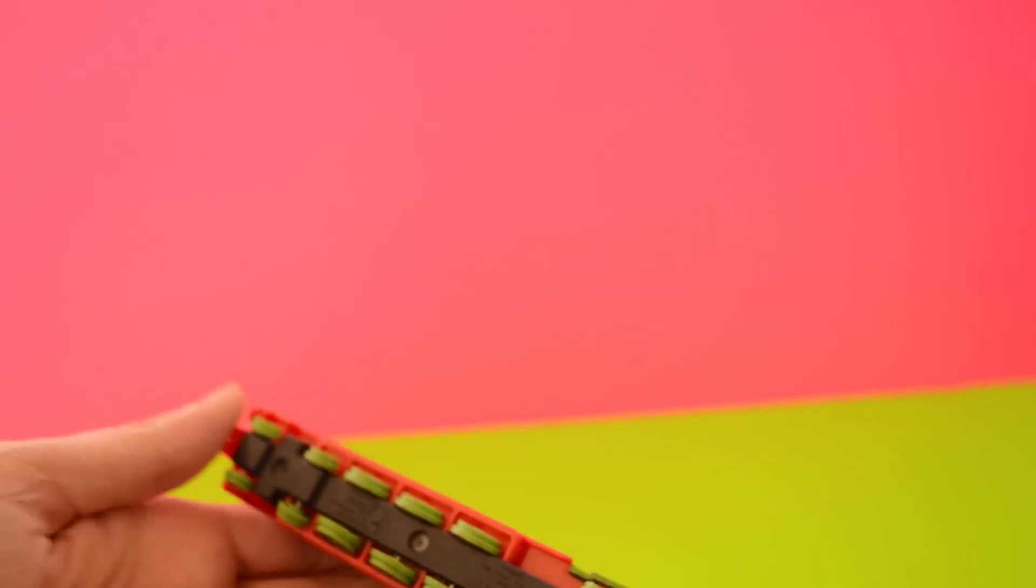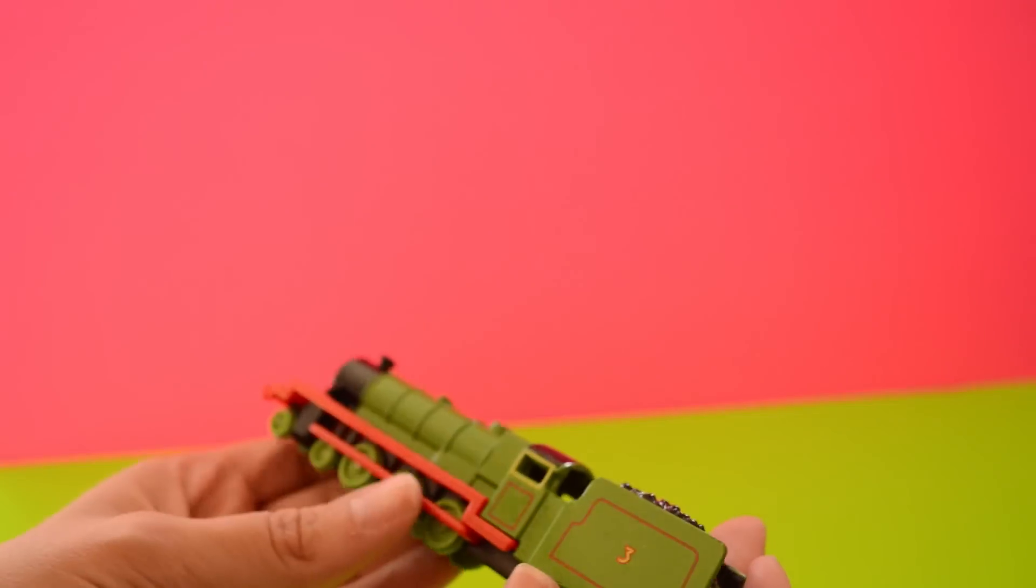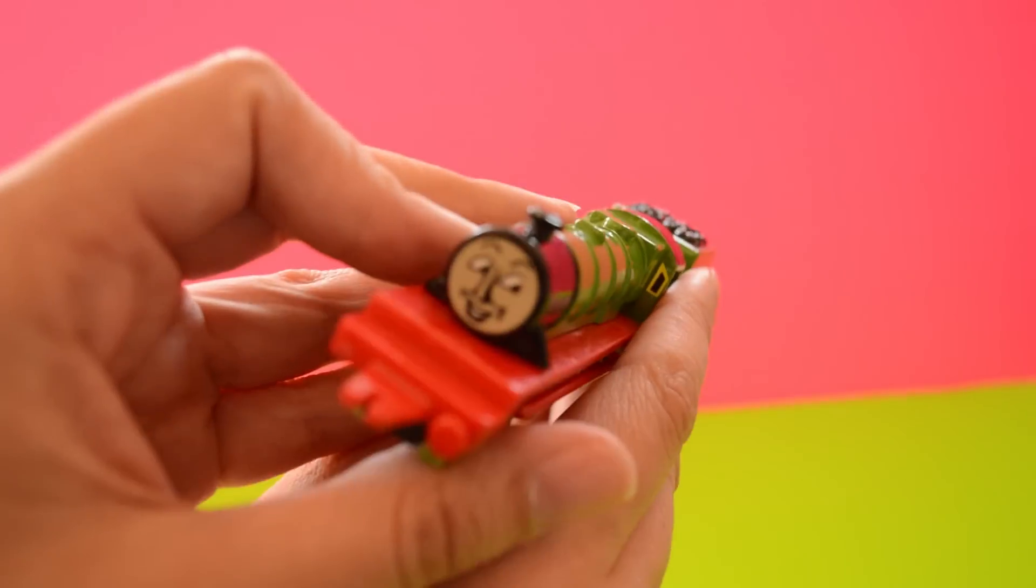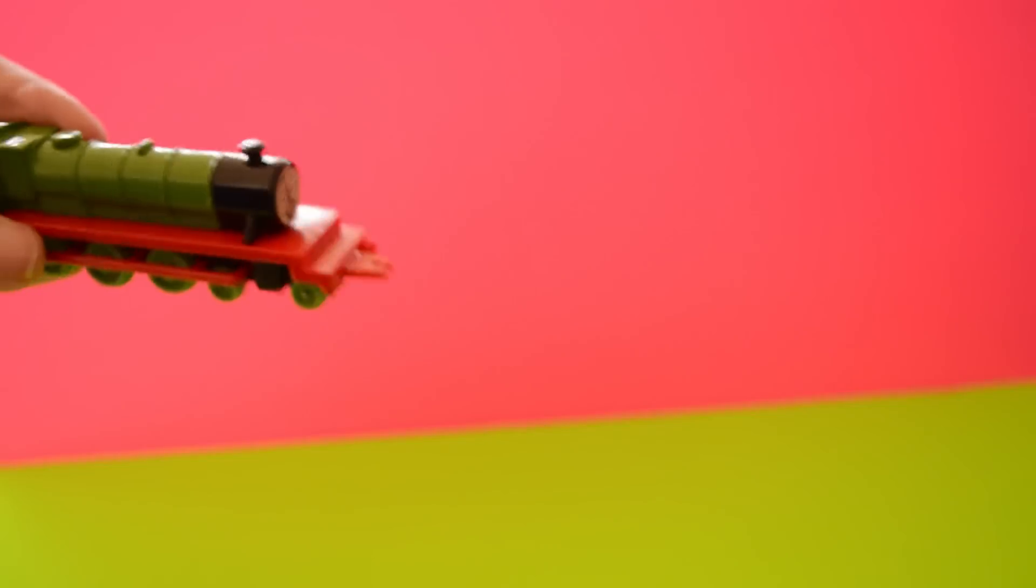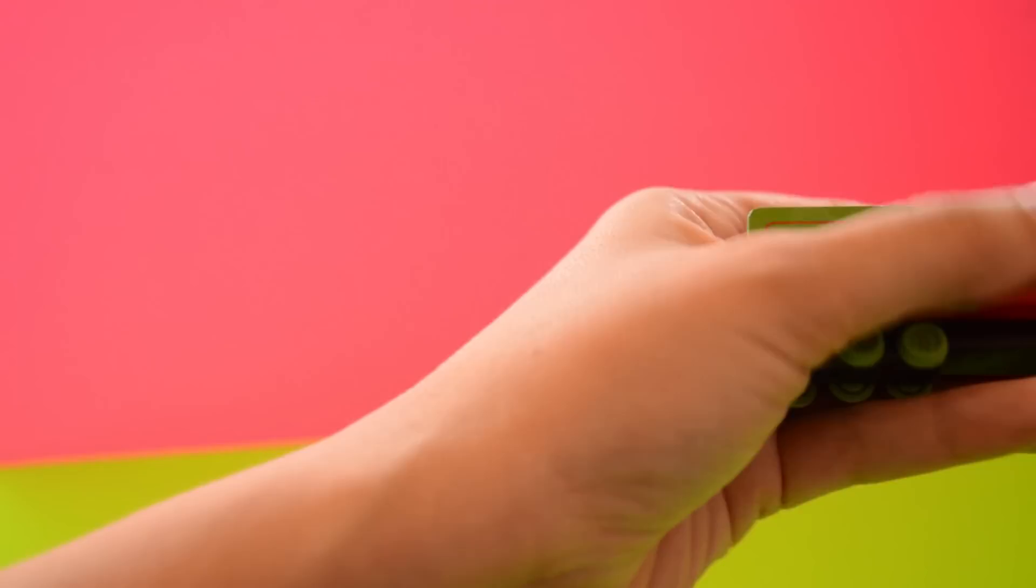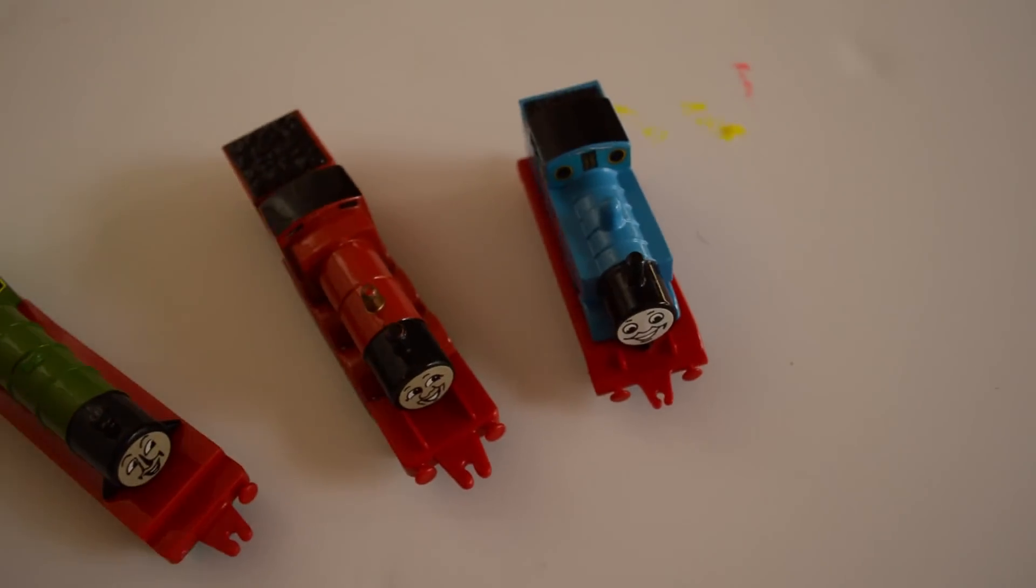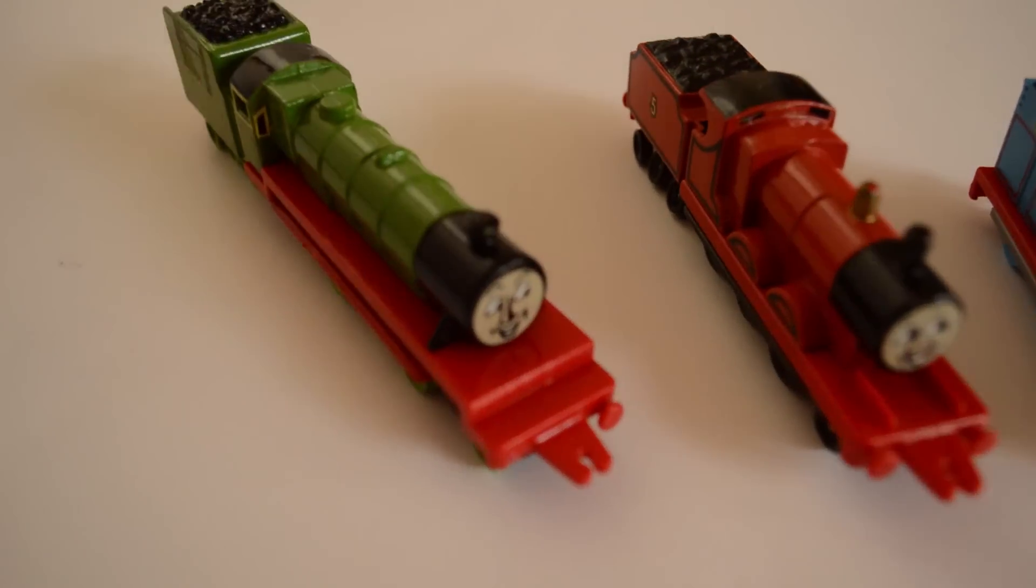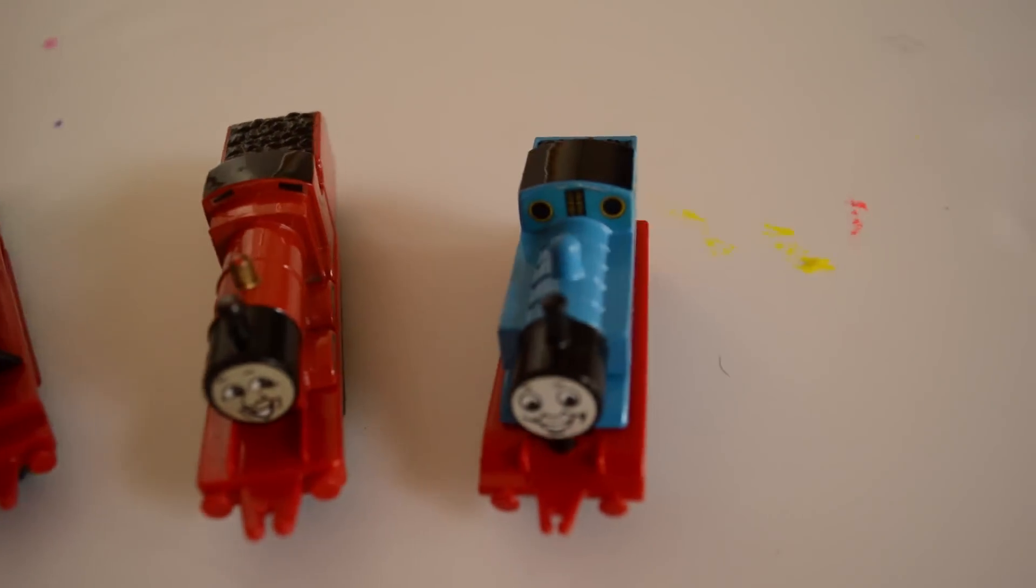So these are very cool trains, very excited about them, and it was a lucky thrift store score. They're two, they're four, they're six, they're eight. Shunting trucks and hauling freight. Red and green and brown and blue, they're the really useful crew. All with different roles to play.